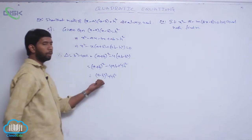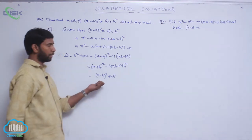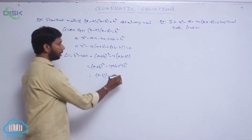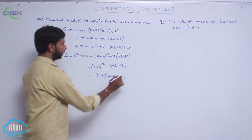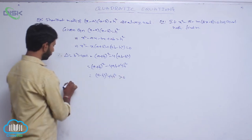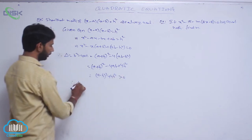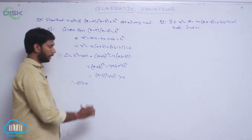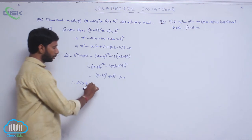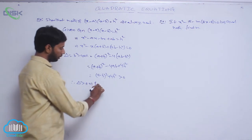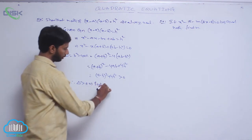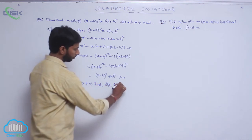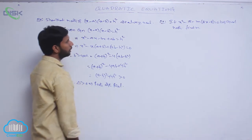Here (a minus b) whole square is always positive and 4h square is always positive. Therefore, the discriminant delta is greater than 0, which means the roots are always real.